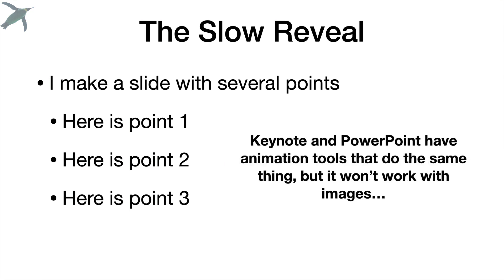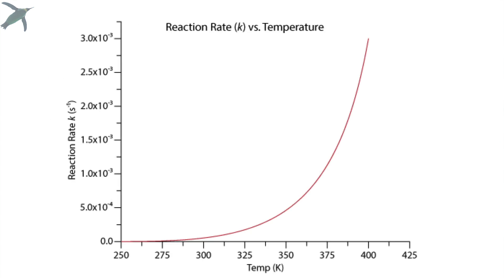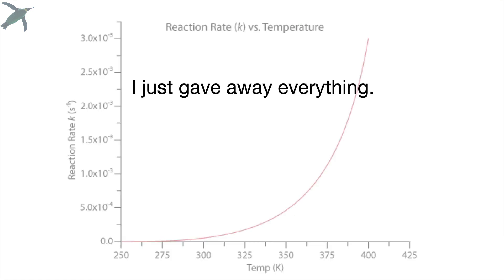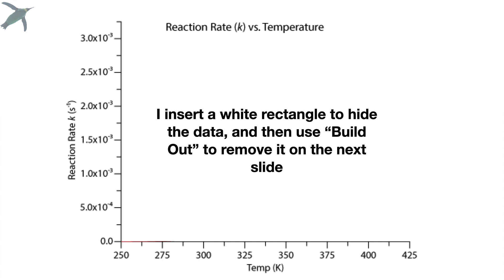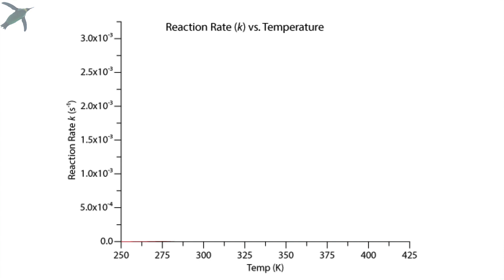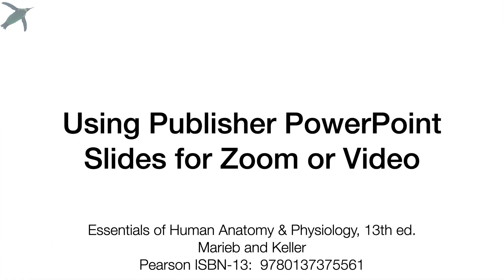You can of course use animation tools, but often you want to do this with data and images also, and you'll need shapes for that. If I show this all at once, I just gave away everything. It's much more effective if I cover up the data and then ask students about it — we can talk about it in a Zoom class, I get them to think and talk, and then I reveal the relationship. It's much more dynamic this way.